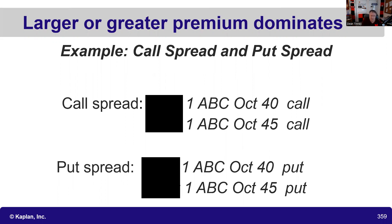Here I have a 40 call and a 45 call. Whether it's long or short doesn't matter — what is more desirable? From the long perspective, what's more desirable: a choice to buy at 40 or a choice to buy at 45? The 40 is more desirable — a choice to buy at the lower price. So if I'm selling it, I'm going to demand a higher premium. If I'm buying, it's going to cost more. If you want to save money, buy the 45 instead of the 40; if you want to bring in more money, do the 40.